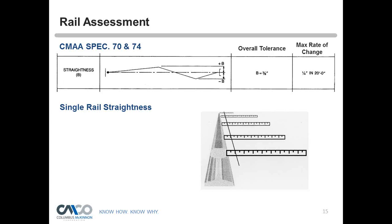The next step is to look at single rail straightness, starting with the reference rail. You've already checked elevation and rail-to-rail span — now you're looking at whether the rail is walking. The tolerance for single rail straightness is three-eighths of an inch, with a maximum rate of change of a quarter-inch per 20 feet.